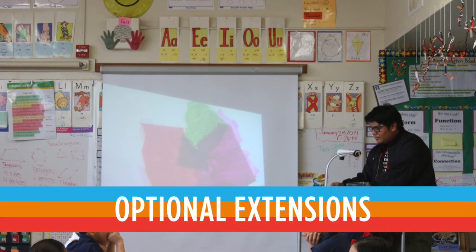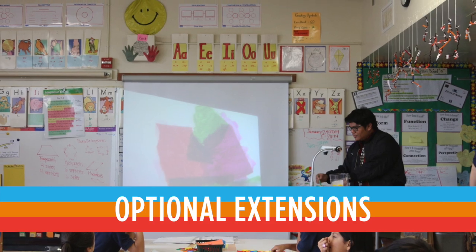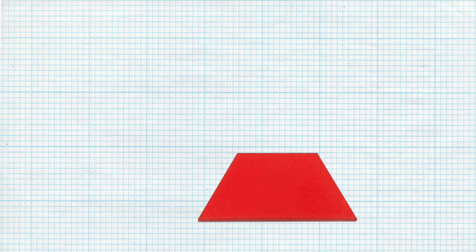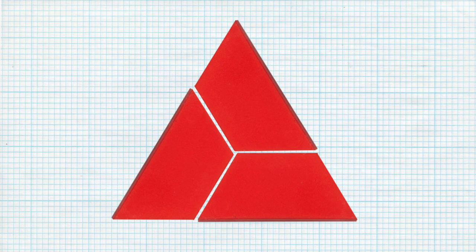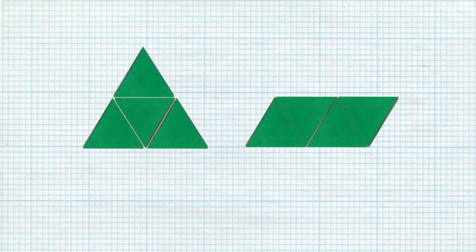One or two of the following extensions can be employed in your classroom to deepen the lesson. Have students create an equilateral triangle out of three units, or a bigger rhombus or a bigger trapezoid. Give students a certain amount of shapes — for example, four triangles — and ask them what shapes can be made with them.